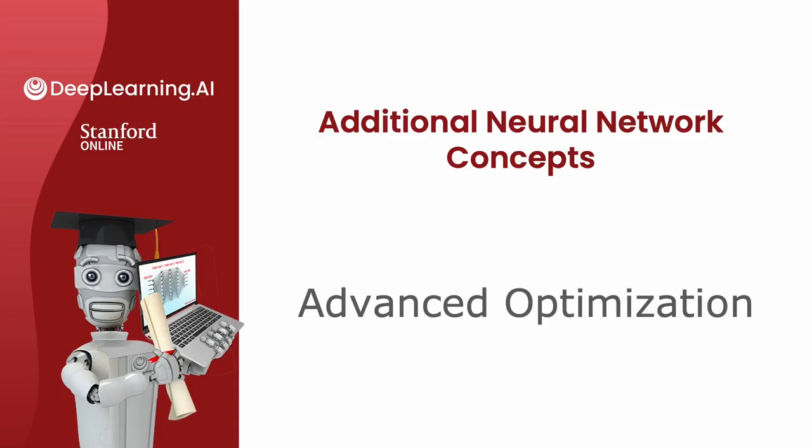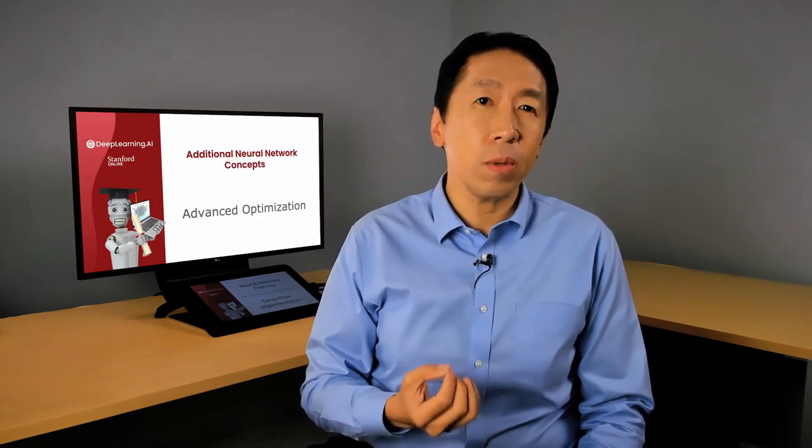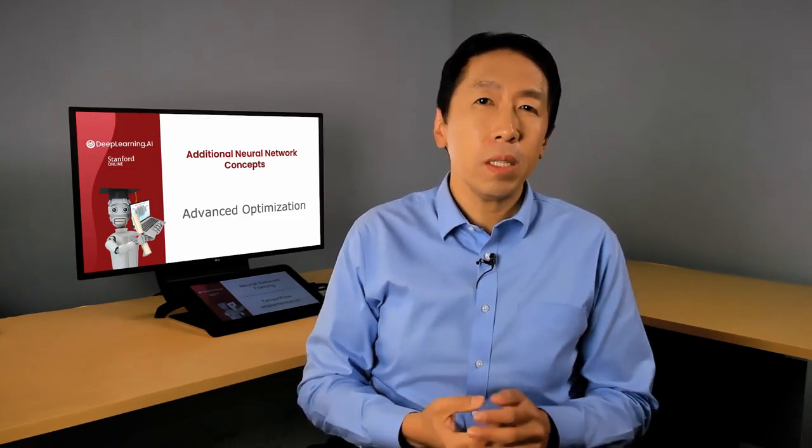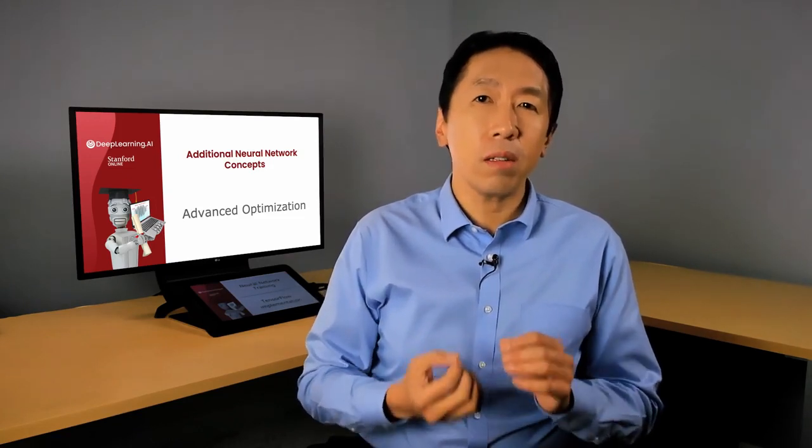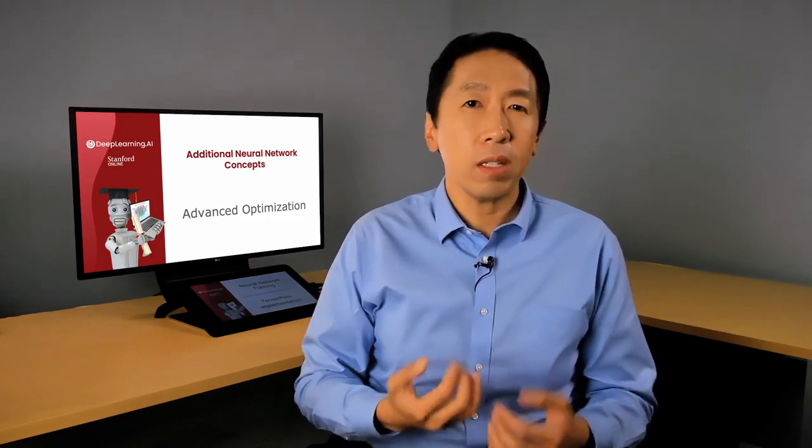Gradient descent is an optimization algorithm that is widely used in machine learning and was the foundation of many algorithms like linear regression, logistic regression, and early implementations of neural networks. But it turns out that there are now some other optimization algorithms for minimizing the cost function that are even better than gradient descent. In this video, we'll take a look at an algorithm that can help you train your neural network much faster than gradient descent.